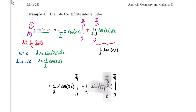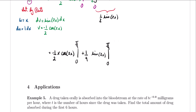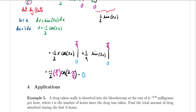So let's go ahead and evaluate this. Using the upper limit first, we're going to have negative 1/2 times π/4 times cosine of 2 times π/4. Now evaluating at the lower limit — since our lower limit is zero and we're substituting it in — we're just going to get minus zero. So for the second term, we're going to have plus 1/4 times sine of 2 times π/4.